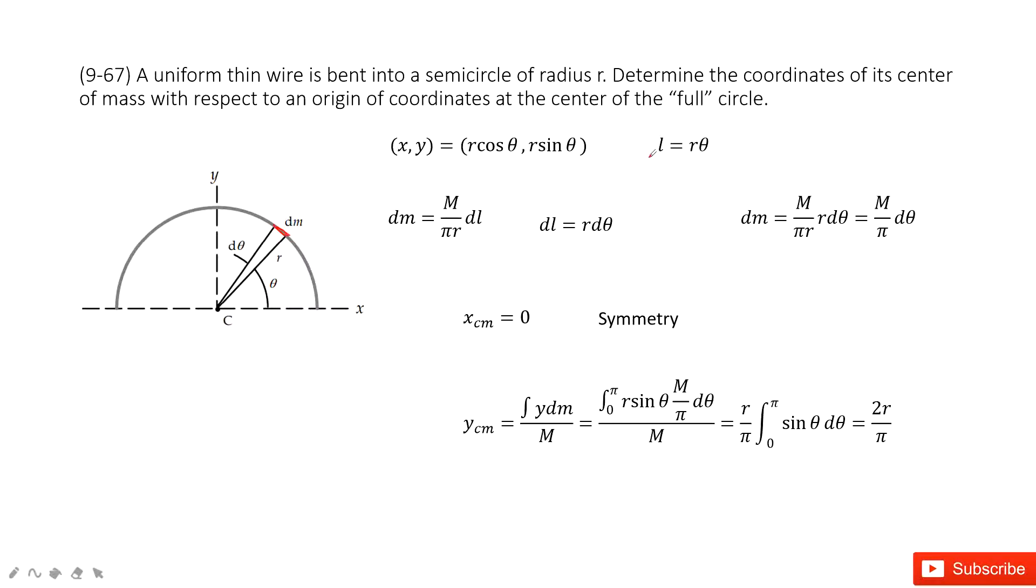Yes, because we know the arc equals r times θ. So that makes dl equal to r dθ. So now we find the dm equal to this equation.